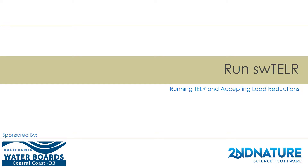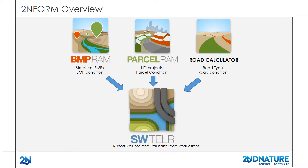Welcome to the Second Nature Stormwater Tool to Estimate Load Reduction video series. This is one video in a series that walks users through how to prepare data and run Teller to quantify runoff and pollutant loading reductions from municipal stormwater improvements. Teller is the stormwater model of 2Inform, a purpose-built software solution for cities and counties to conduct smart inspection, communicate environmental benefits, and simplify regulatory compliance.